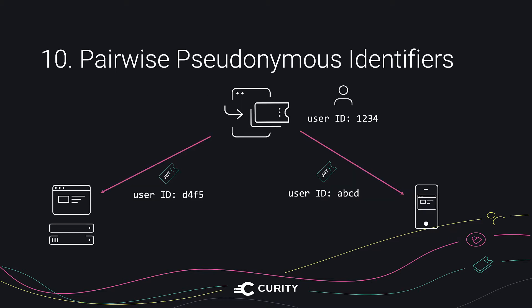The OpenID Connect standard introduces PPID — Pairwise Pseudonymous Identifiers. It's a solution which protects the user ID, especially useful when you use sensitive data as the ID, such as a social security number. When using PPID, every client gets a unique obfuscated user ID, so you not only protect the data used for the ID itself, but also ensure that different clients won't be able to correlate the user's data.